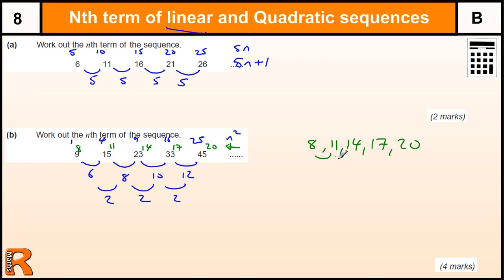Now this sequence is linear because it goes up by 3 each time. So this is based on the 3 times table, 3, 6, 9, 12, 15, and hopefully we can see that you've got to add 5 to that sequence to get this one. Okay, so this is the 3n sequence, and then we've got to add 5 to that. So this is the 3n plus 5 sequence.